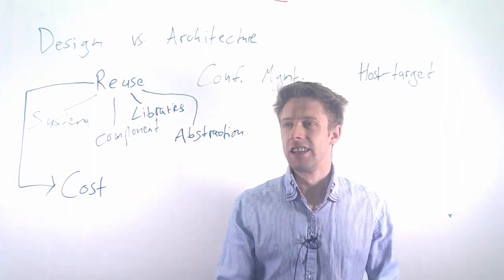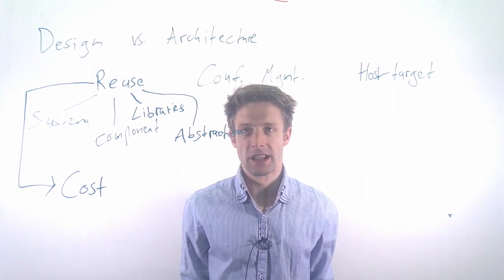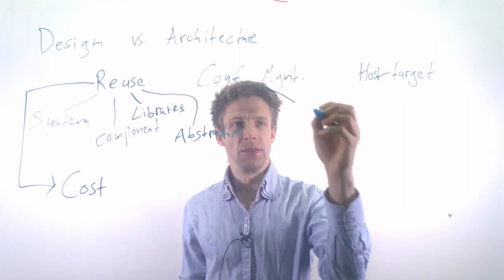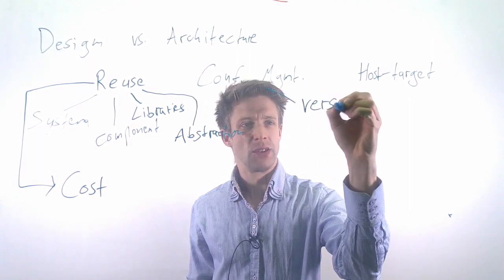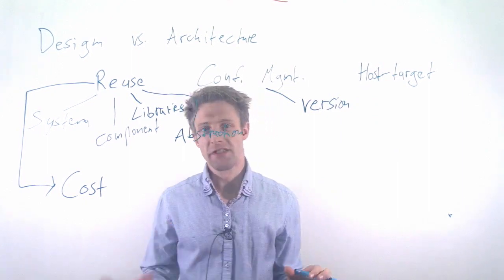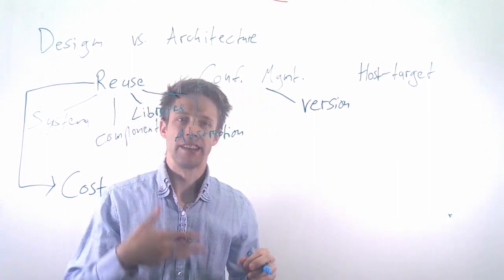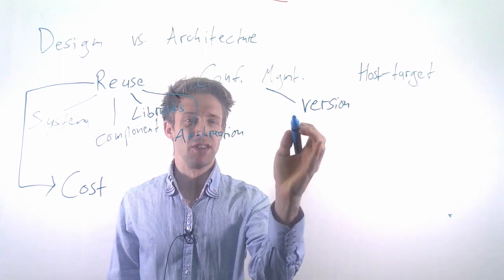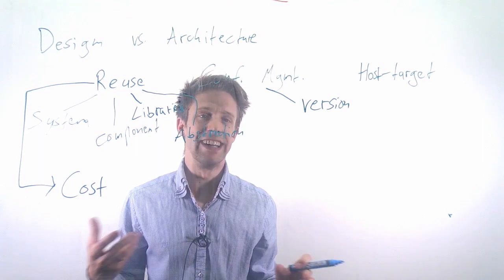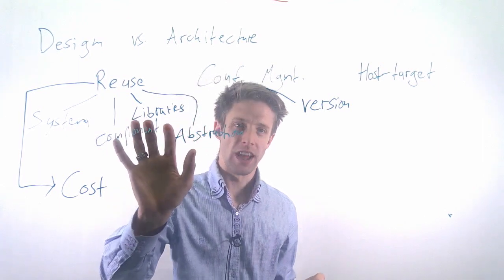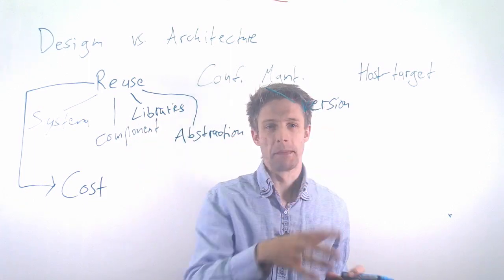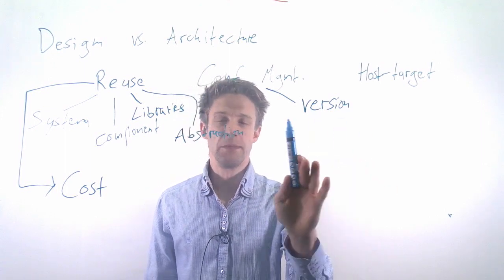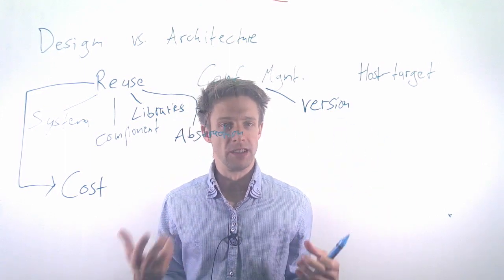Another part which is really important in software design and implementation is configuration management. That is really a number of issues. It's first of all having access to the right versions of your software. Many of you have so far only ever implemented one product and slowly evolved it. But in many cases in real life, you have different versions of your software that are in use. This doesn't matter whether you're developing a small library or it's some embedded system like an airplane where things are really built physically in.